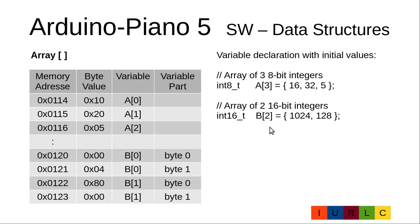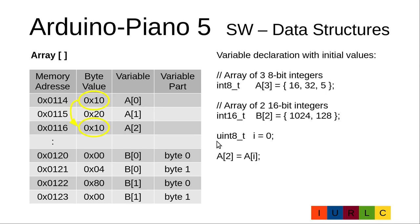During declaration, the size of the array must be a constant so the compiler knows how much memory to reserve. To access one of the elements during program execution, the index can be either a constant or a variable. We have here an unsigned integer variable e initialized with 0, and the assignment A[2] = A[e]. Since e is 0, the assignment is A[2] = A[0].